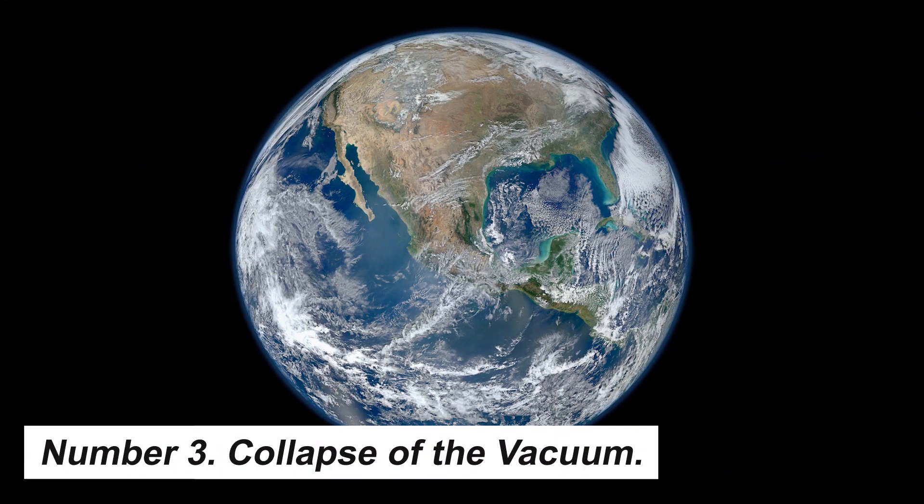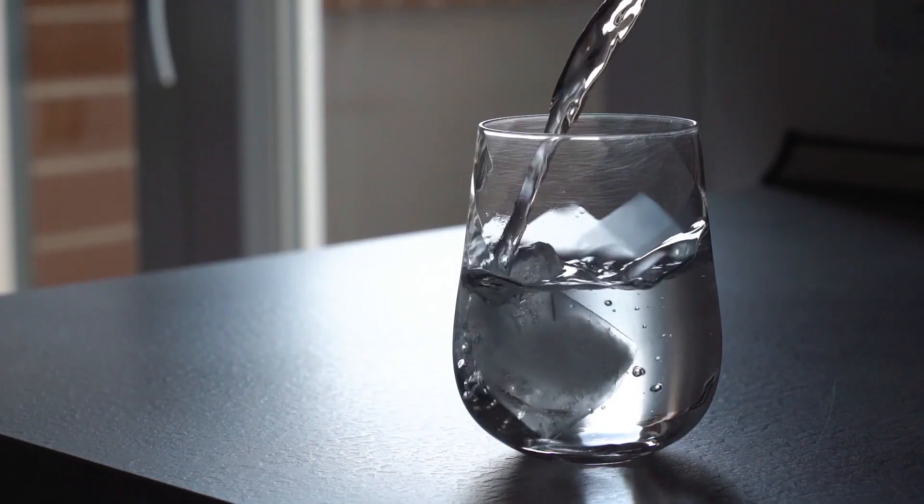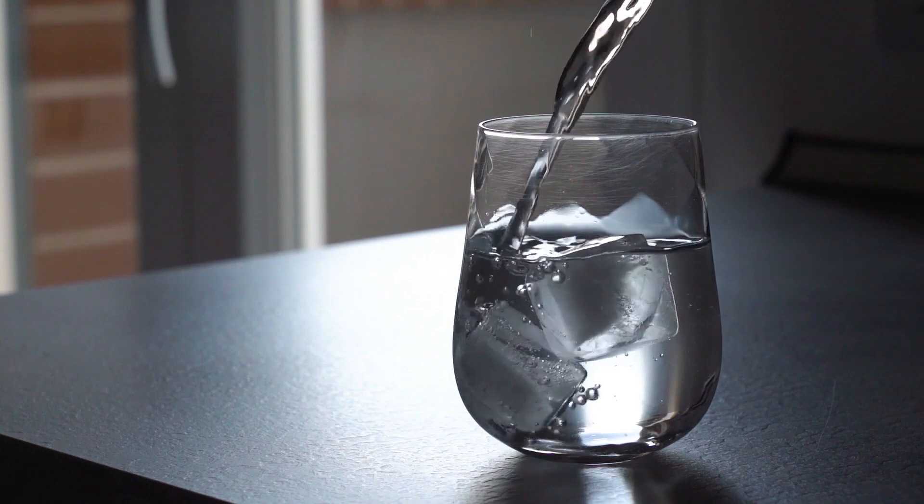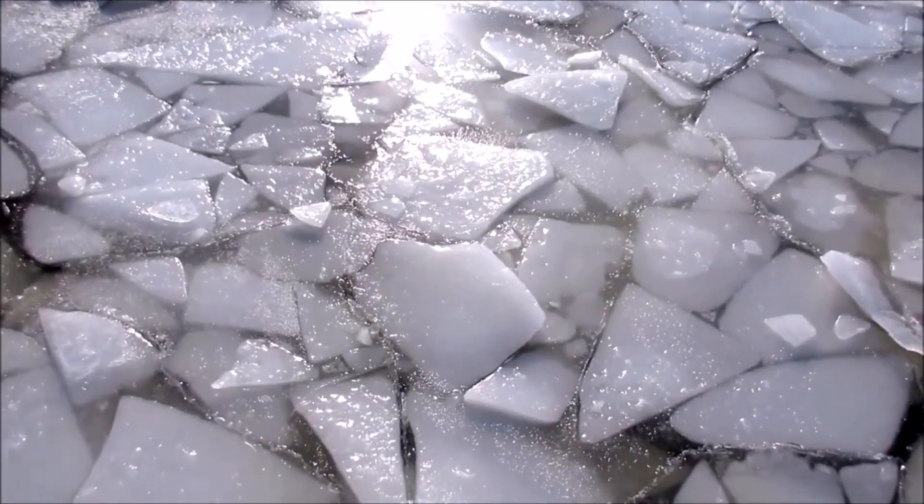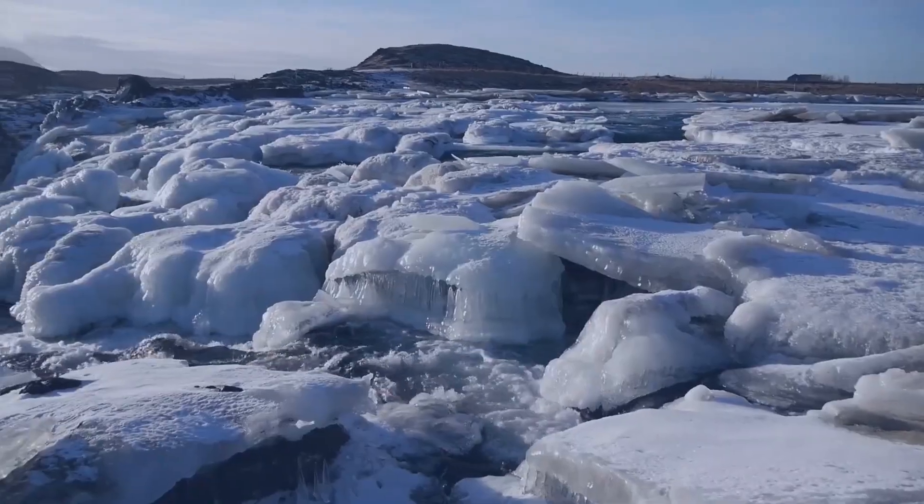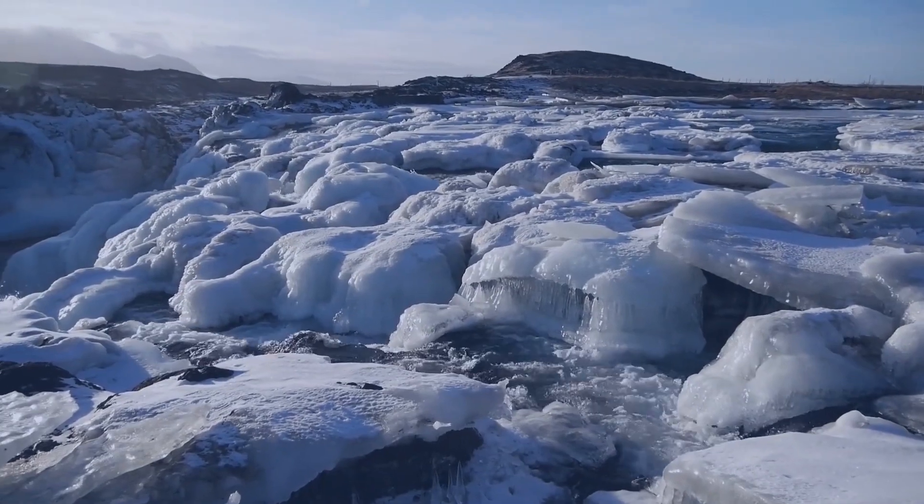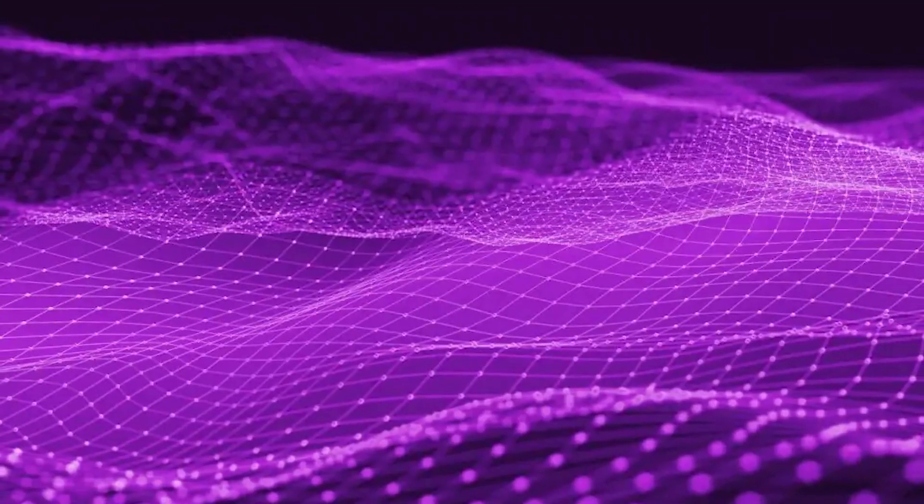Number 3: Collapse of the Vacuum. Kurt Vonnegut popularized the concept of Ice Nine in his book Cat's Cradle, a type of water that is significantly more stable than conventional water and thus solid at ambient temperature. When a small amount of it is released, all water on Earth instantly turns to Ice Nine and freezes solid. Although Ice Nine was a satirical creation, an abrupt and disastrous phase change is a possibility.